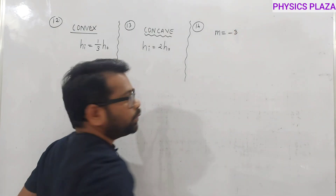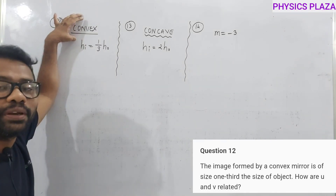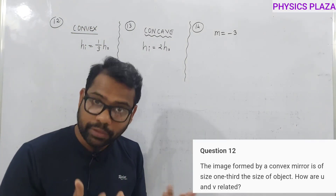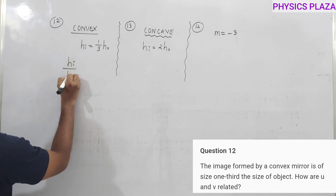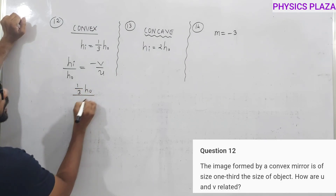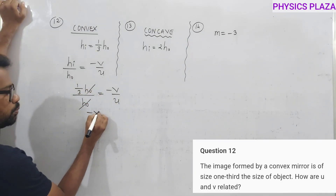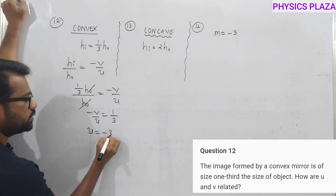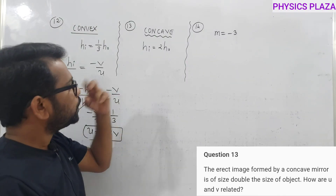Twelfth numerical: a convex mirror forms an image such that the image size is one-third the object height. Find the relation between v and u. Using image height/object height = −v/u: (1/3)h₀/h₀ = −v/u, so 1/3 = −v/u. Cross multiplying: u = −3v.